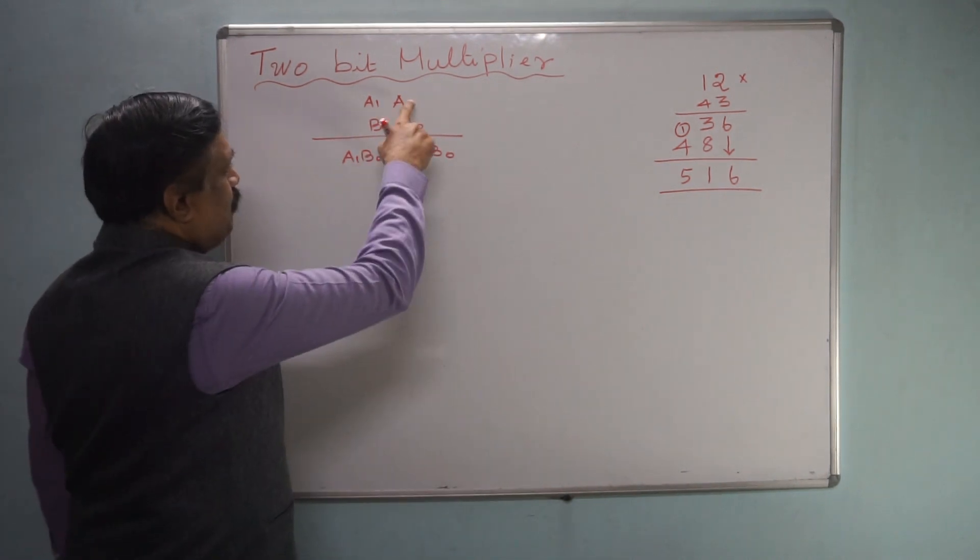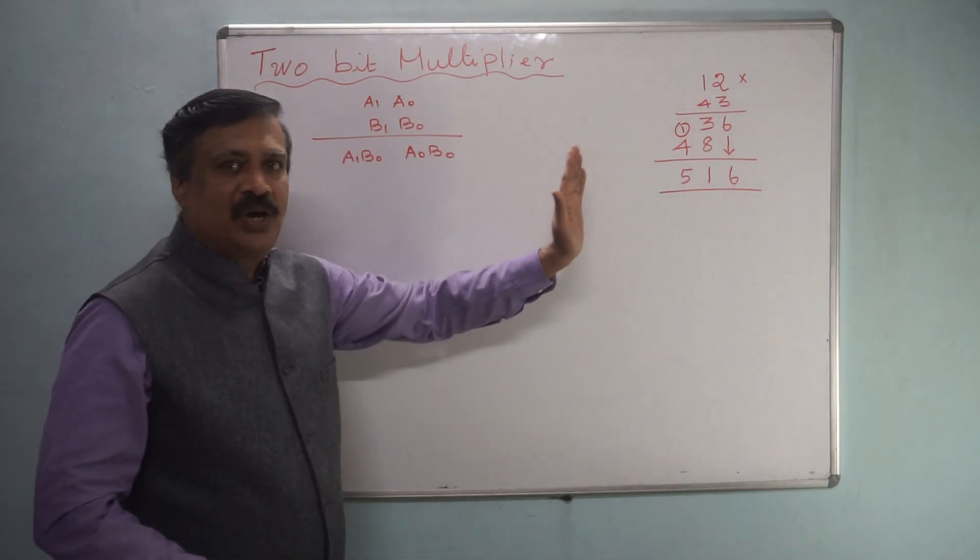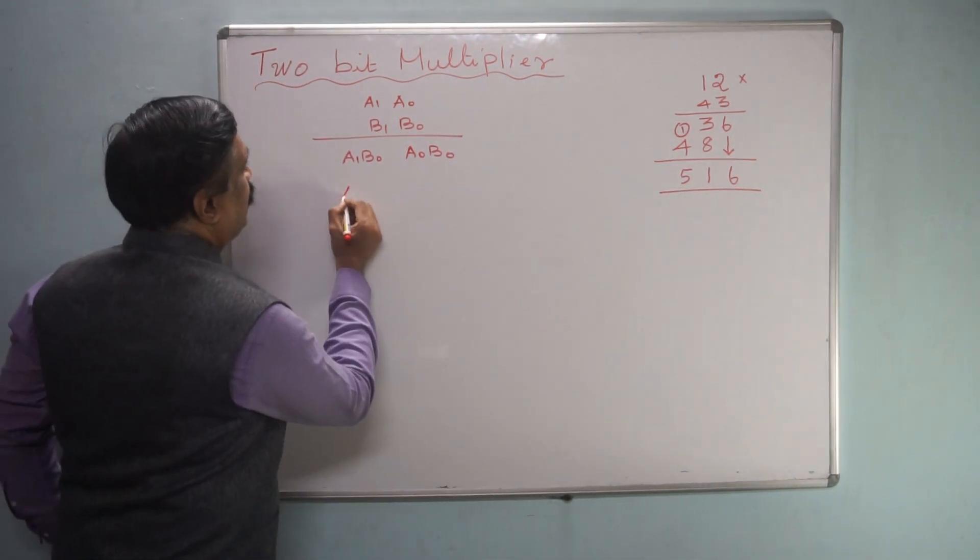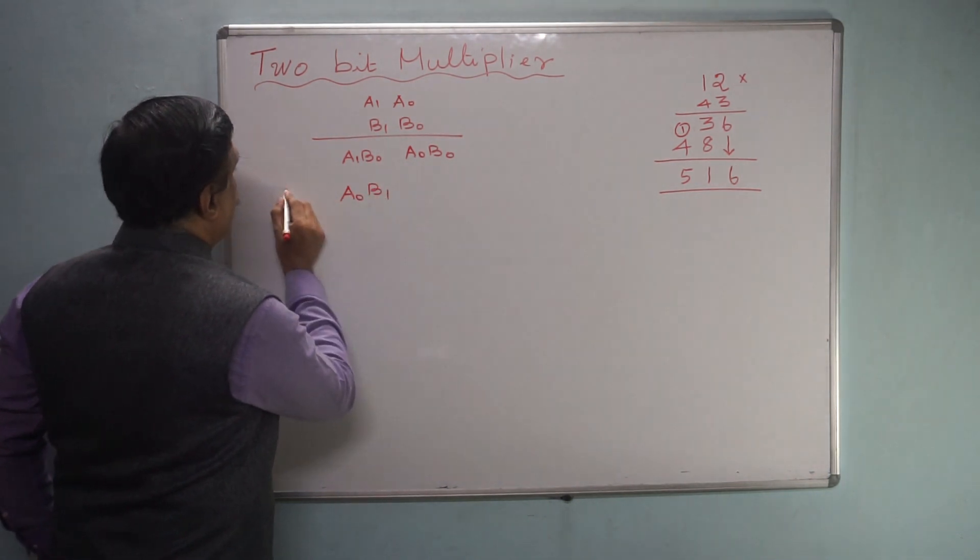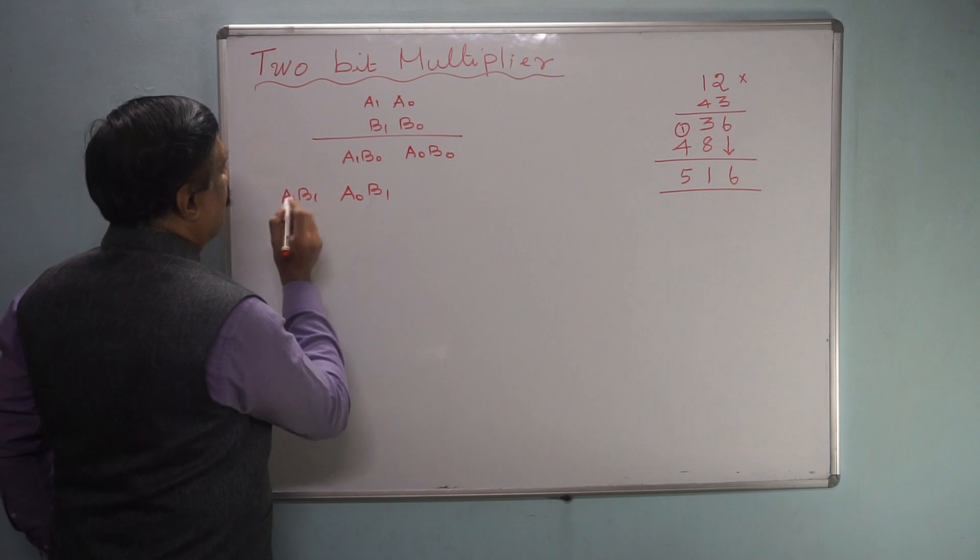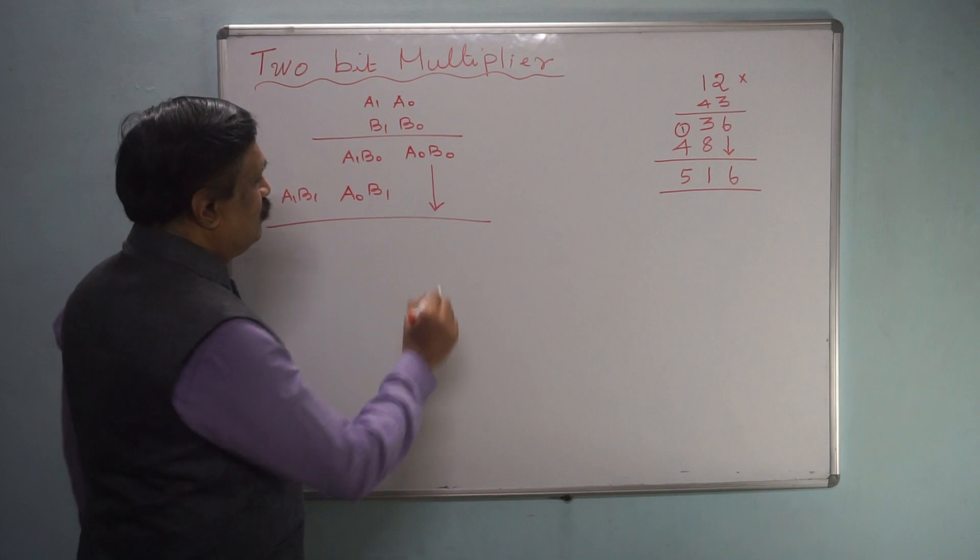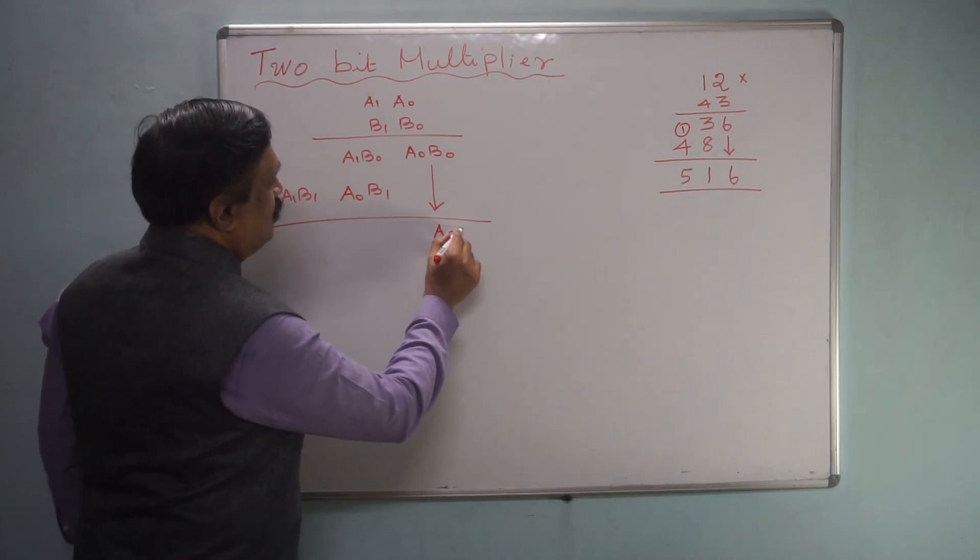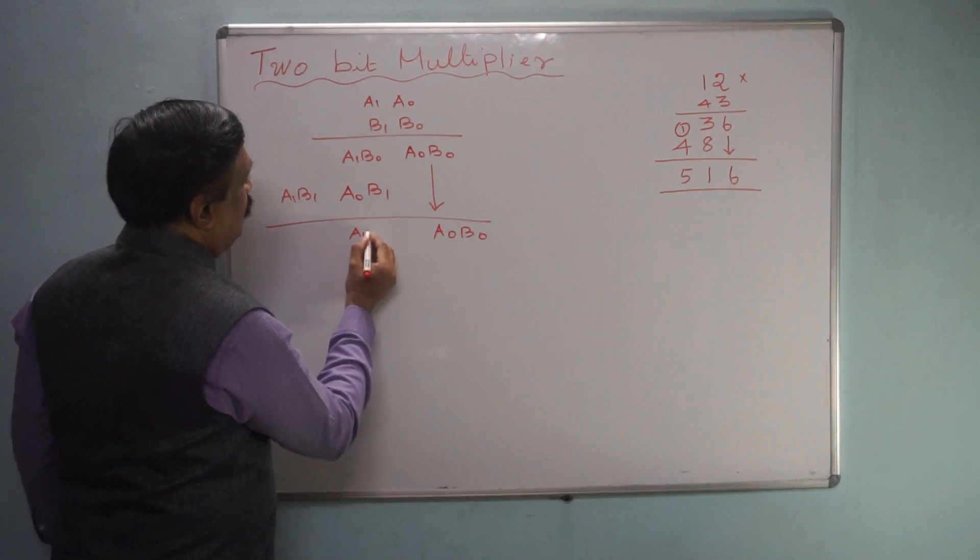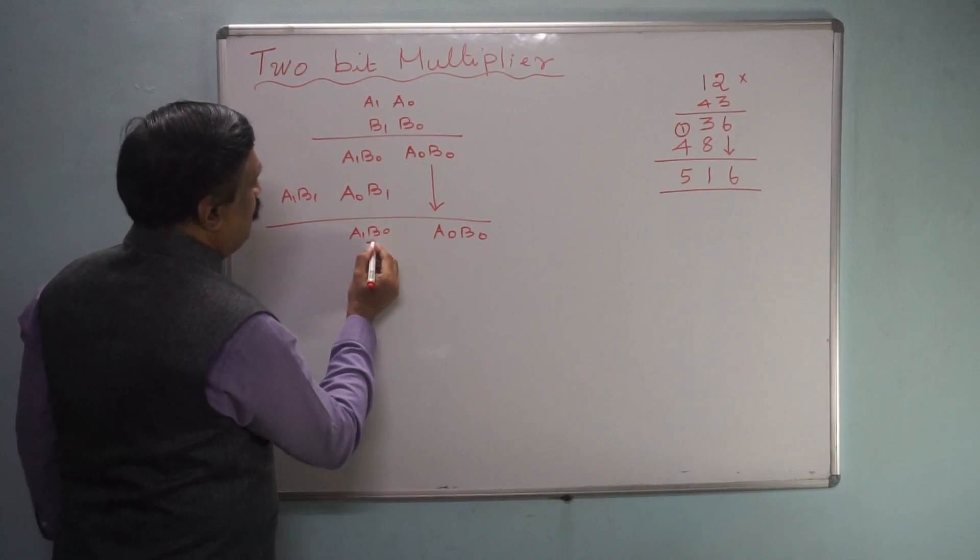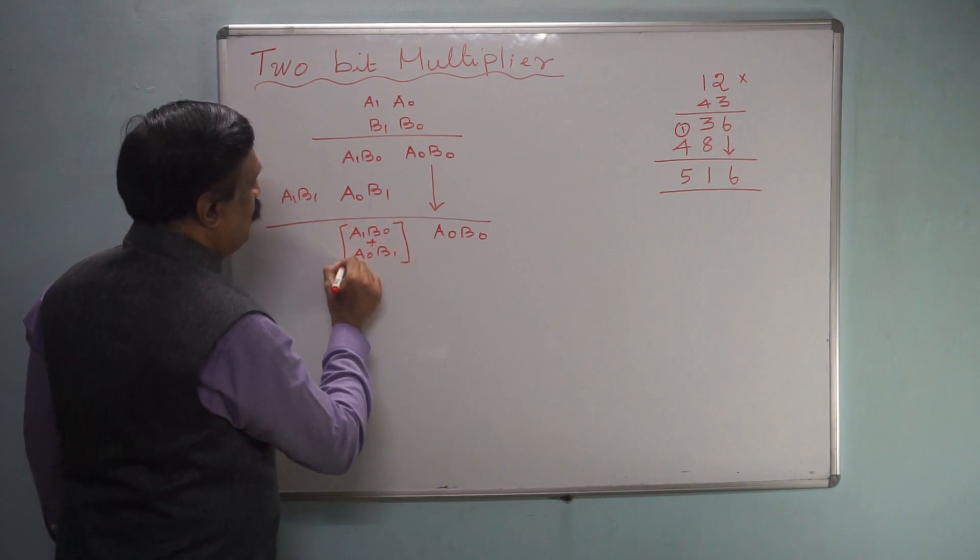Now you have to multiply B1 and already you know, you have to shift 1 digit or 1 bit left. Therefore you have to write here, that means A0, B1 and A1, B1. After that, you have to bring this directly. Therefore here you are having A0, B0 and you have to add this, therefore here A1, B0 plus A0, B1, you are adding these 2.